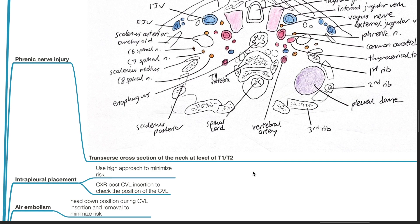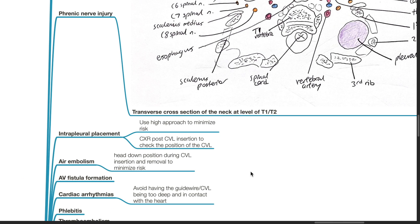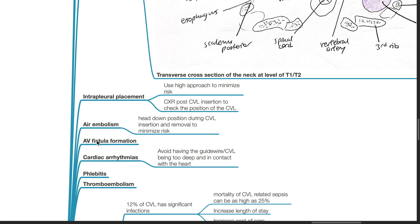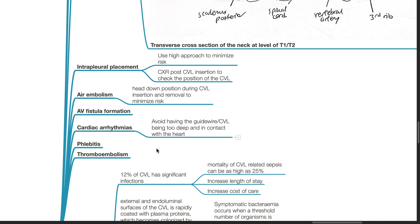The phrenic nerve is at the level of T1 and T2. Intrapleural placement — use a high approach to minimize risk or ultrasound, and obtain a chest X-ray after CVL insertion to check for the position of the CVL. Air embolism can occur — to minimize this risk, use a head-down position during insertion and removal of the CVL.